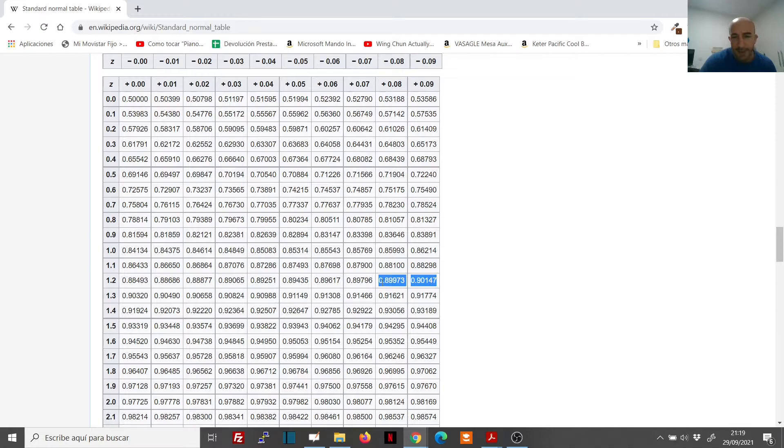So if we look at the table, we see that the values are between 1.28 and 1.29. But we don't have 0.9 exactly.